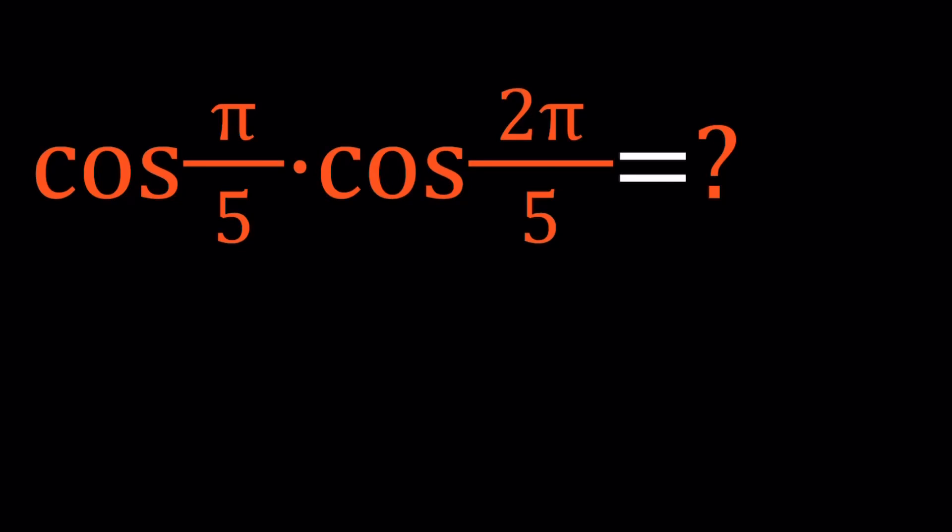Hello everyone. In this video, we're going to be evaluating a trigonometric product. We have cosine of pi over 5 times cosine of 2 pi over 5. These are in radians. I'm going to convert them to degrees, which is a little easier to work with.